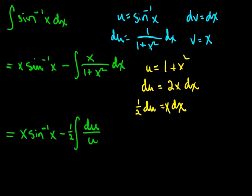So once again, we have x sine inverse of x minus 1 half integral du over u, and the integral of du over u is natural log of absolute value of u in this case.